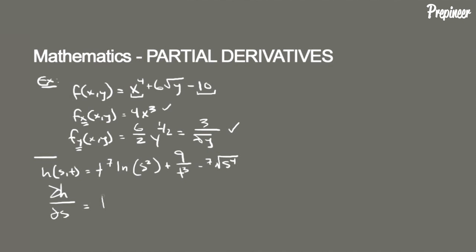So we got t to the seventh, 2s over s squared minus 4/7 s raised to the 3/7, which also simplifies to 2t to the 7th divided by s minus 4/7 s to the negative 3/7. Notice how the second term completely went away and we just found the derivatives of the remaining terms.